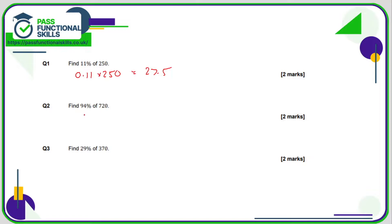94% of 720. The calculation is 0.94 times 720. That comes to 676.8.